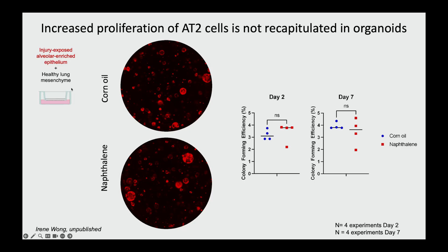This was really interesting to us, and so we wondered, can we model this in the organoids? Irene treated mice with naphthalene or control and put them into the organoid co-culture system, which includes normal mesenchyme. However, she was not able to recapitulate this phenotype. The organoids from naphthalene-treated mice grew similarly to those from corn oil controls. Because this system relies on a normal, healthy mesenchyme, we wondered if there may be other cell types causing the difference in vivo.